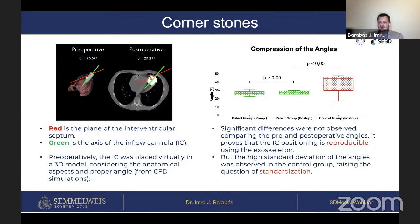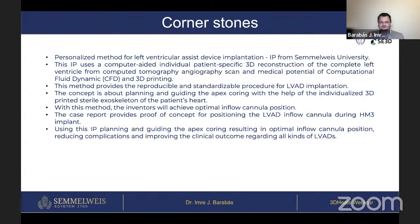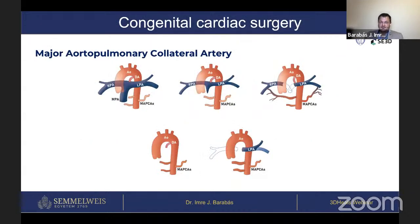The standard deviation is also higher in the control group, meaning the angle is more variable because without the guiding tool during operation there is less precision. The second case is congenital cardiac surgery involving Major Aortopulmonary Collateral Arteries (MAPCAs), meaning these children have aortopulmonary collateral arteries supplying the lungs from the aorta.